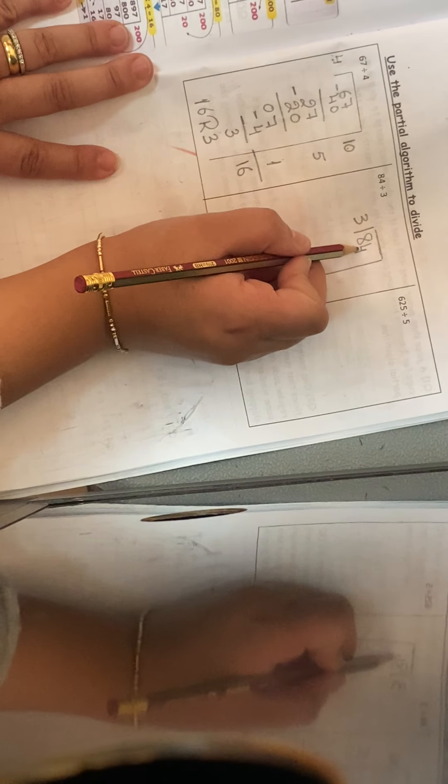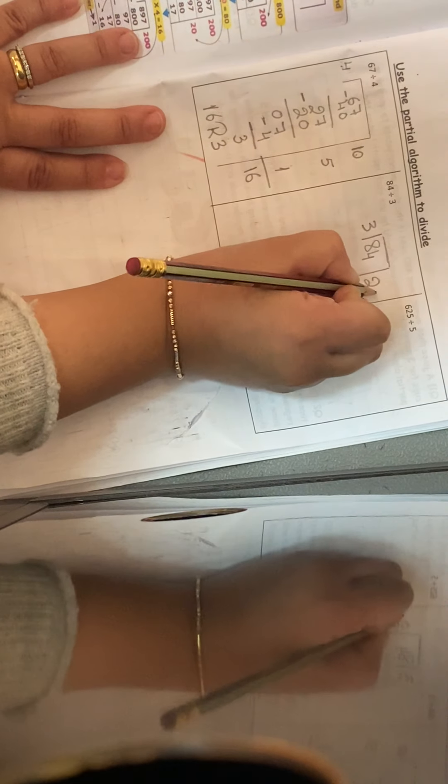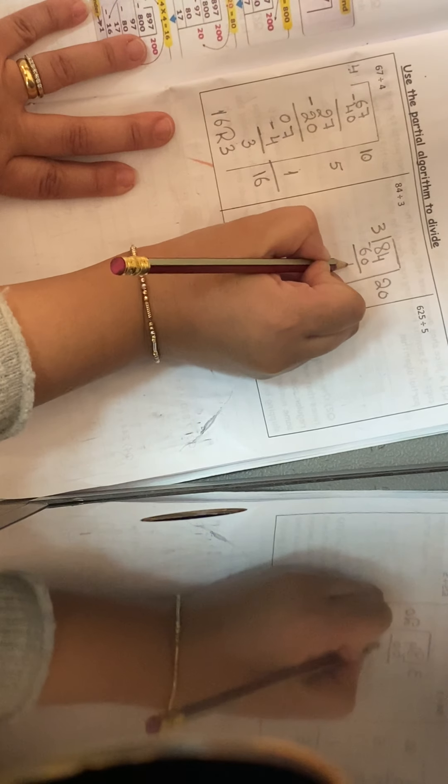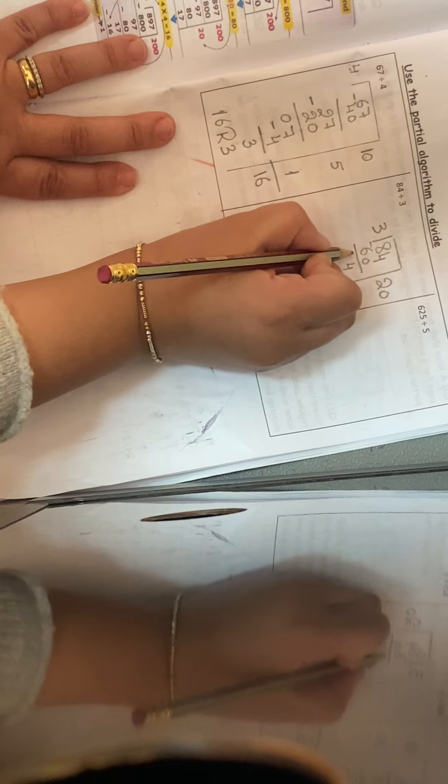What times 3 gives me 80? I will not find. I will go back. 70, no. 60, yes, I have the 20. So 20 times 3 is 60. I will do minus. 4 minus 0 is 4. 8 minus 6 is 2.